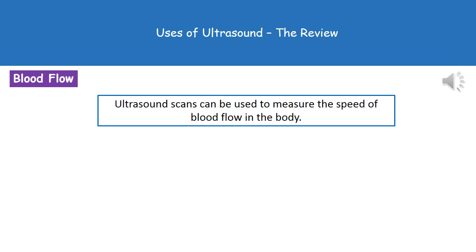The third way we can use ultrasound is to actually measure the speed of blood flow in the body. You're likely to get a question asking about another use of ultrasound in the body — be very careful not to throw away an easy mark. If the question says 'other than body scans,' you can't use body scans as an example, and that includes scanning developing babies or fetal scans — anything like that. So if the question mentions body scans in any way and asks for another example, you can pick from either breaking up kidney stones or measuring the speed of blood flow in the body.